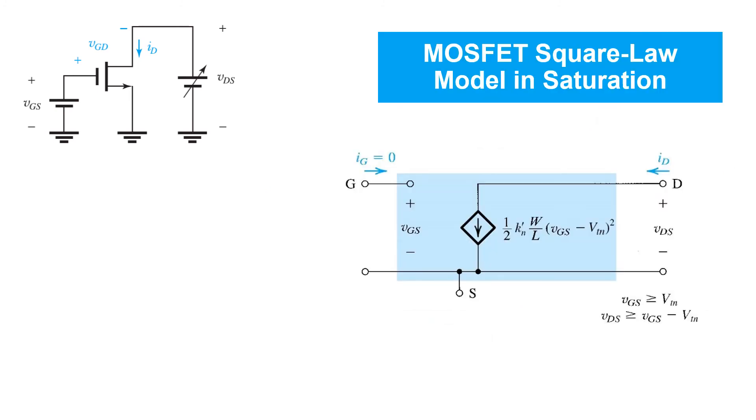So if we're sure that the transistor voltages are satisfying the conditions required for it to be in saturation, that is specifically the VGS is greater than the threshold voltage and VDS is greater than the overdrive voltage, then we can simply replace it with this equivalent square-law model. In this model, you'll notice that the gate is not connected to anything, and that's because physically the gate is insulated from the rest of the transistor by the oxide layer, so no DC current can flow into the gate.